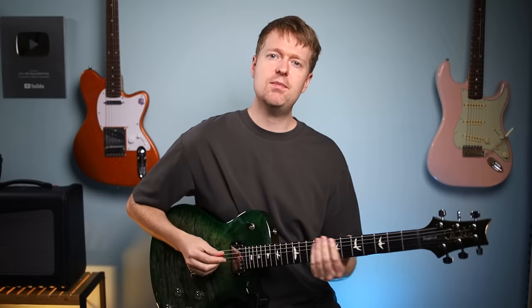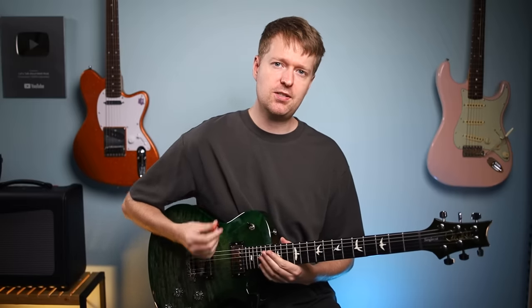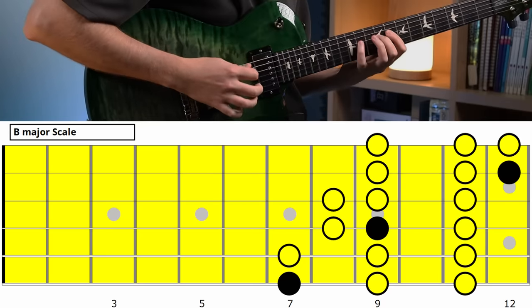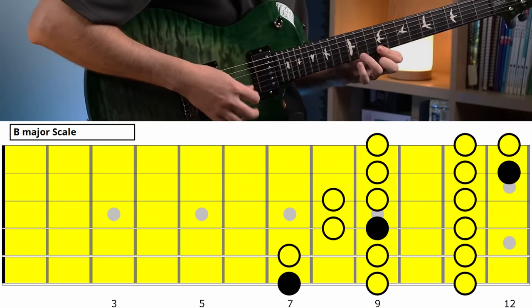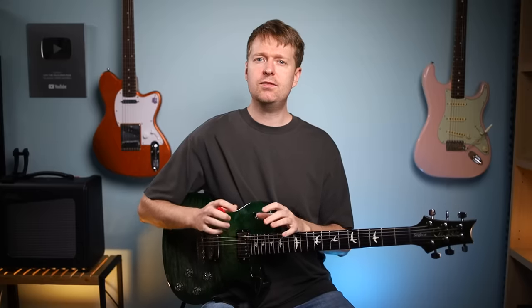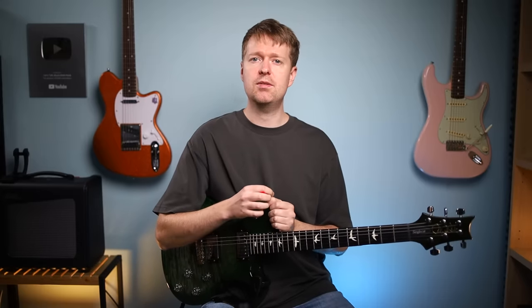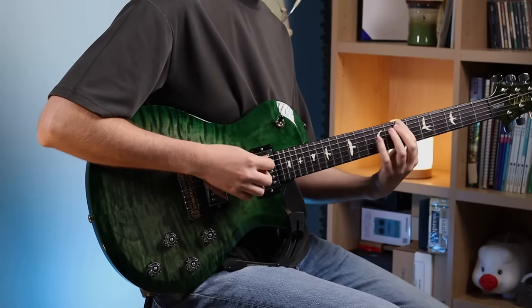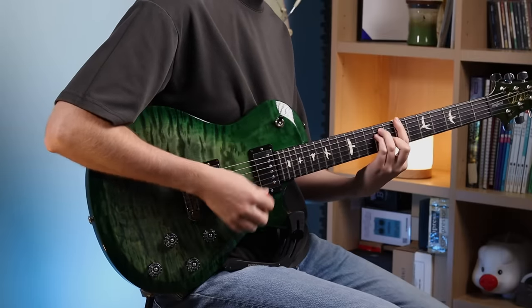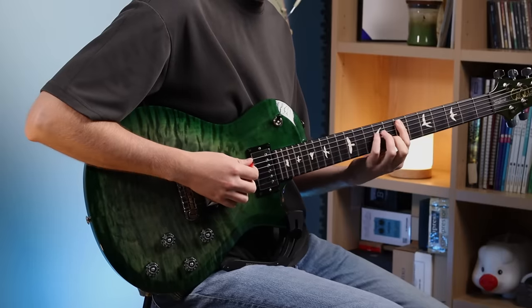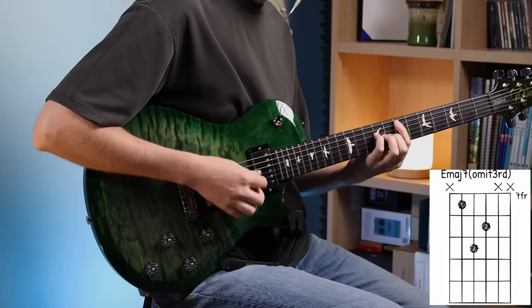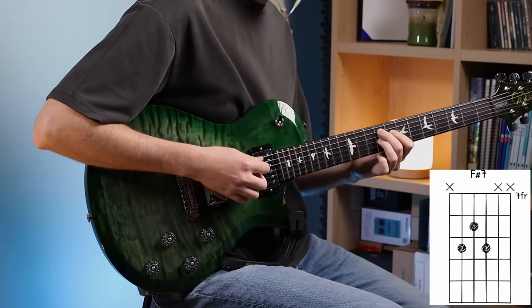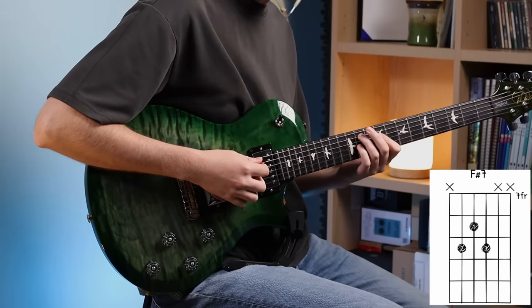First, learn this major scale shape if you haven't already — it's super easy because it's uniform across all of the strings. Second, find the chords you can use from the fifth string roots. Typically this is going to be the fourth, fifth, and minor sixth chord in that key. In this case our key is B flat major and the chords are going to be from this fifth string root. There's also a dominant seventh shape you can use and a minor sixth shape.